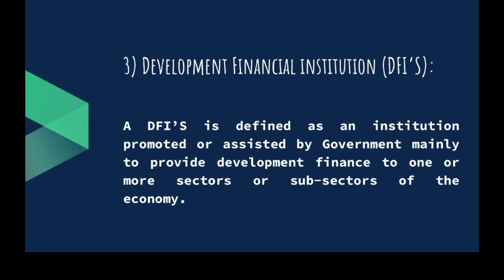The third institution is development financial institutions or DFIs. A development financial institution is defined as an institution promoted or assisted by governments mainly to provide development finance to one or more sectors or sub-sectors of the economy.